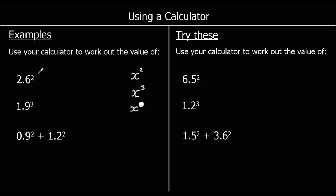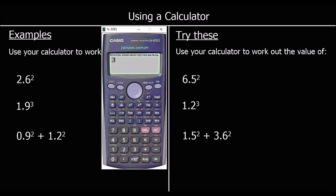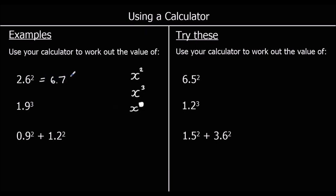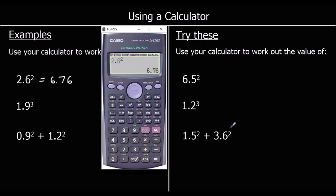We've got 2.6 squared. So we just write 2.6, then the squared button, press equals. It's 169 over 25, or as a decimal, 6.76. For the second one, we've got 1.9 cubed. We can either use a cubed button or write 1.9 and then use the any power button and write the 3 in ourselves. 1.9 cubed as a decimal is 6.859.